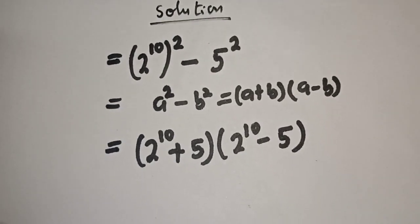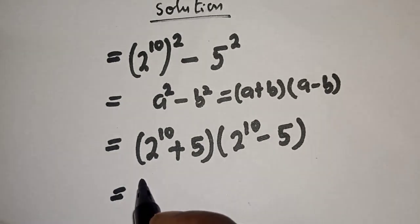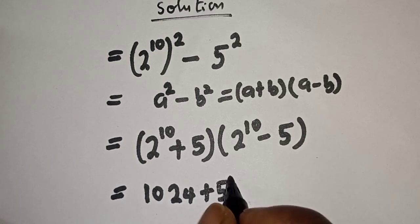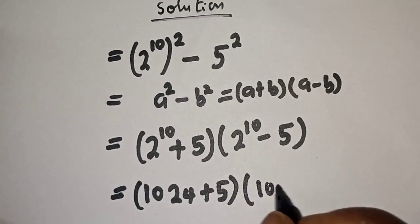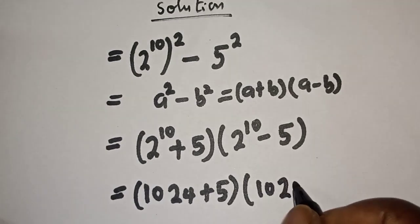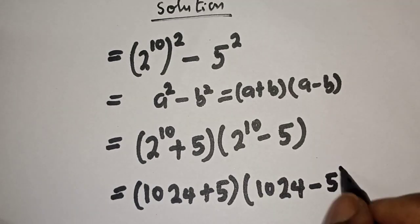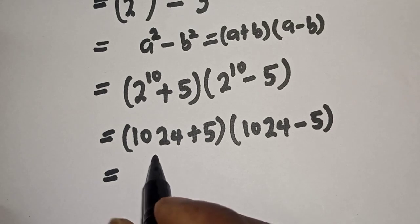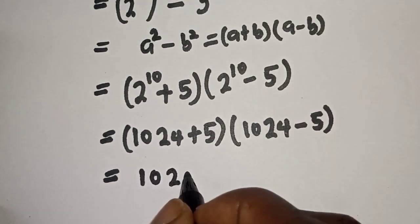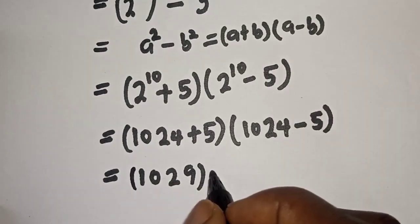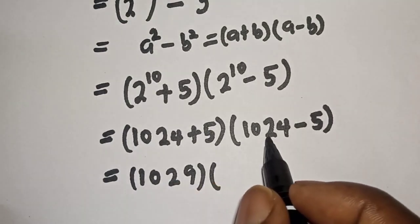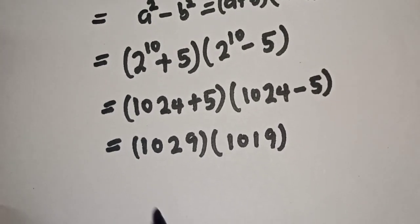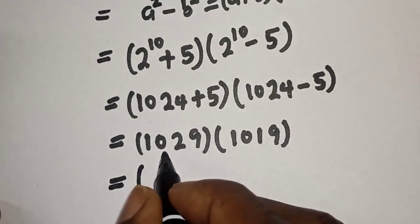Then this is 2 raised to power 10 plus 5, bracket, 2 raised to power 10 minus 5. This is equal to: 2 raised to power 10 is 1024, so we have 1024 plus 5, bracket, 1024 minus 5. 1024 minus 5 is 1019.